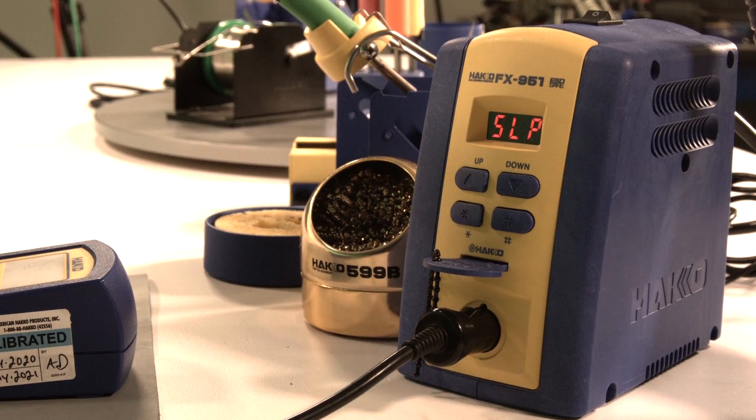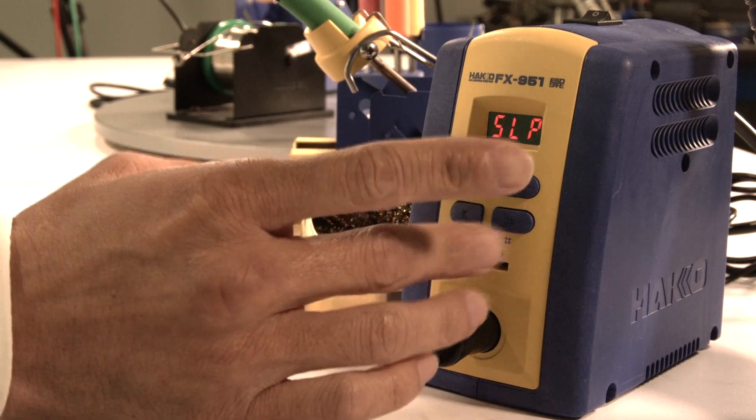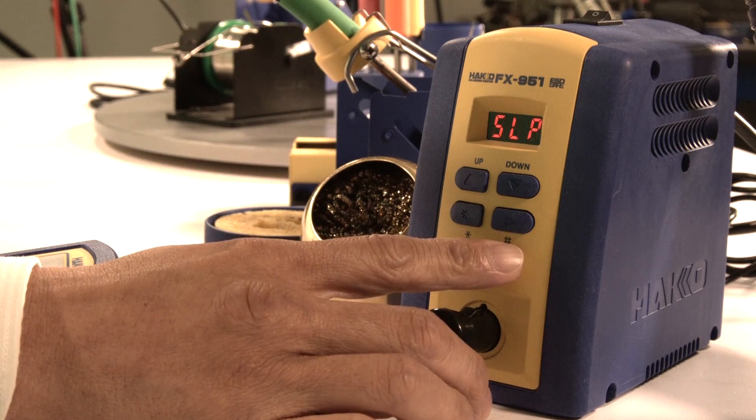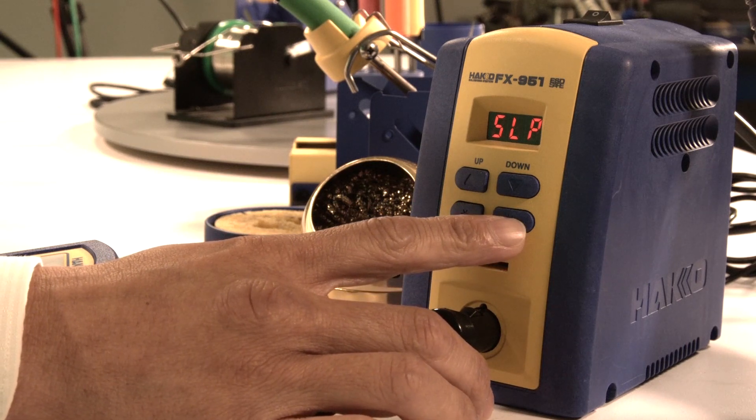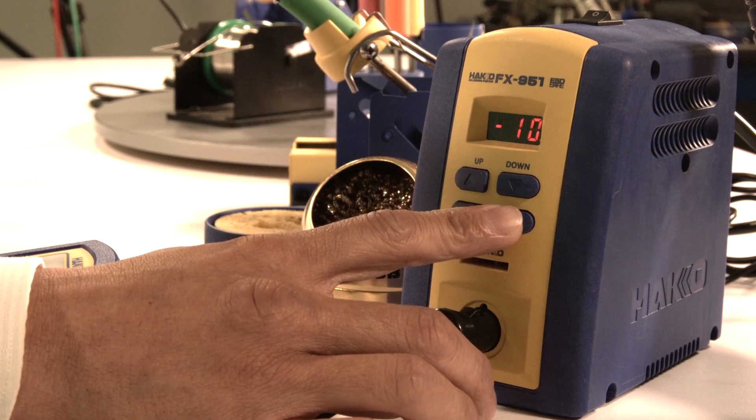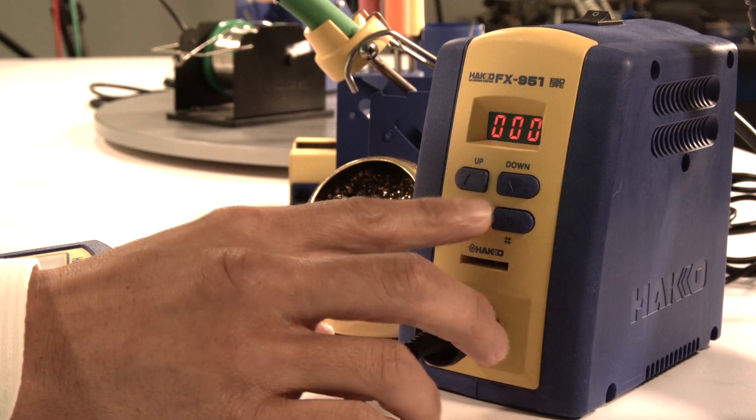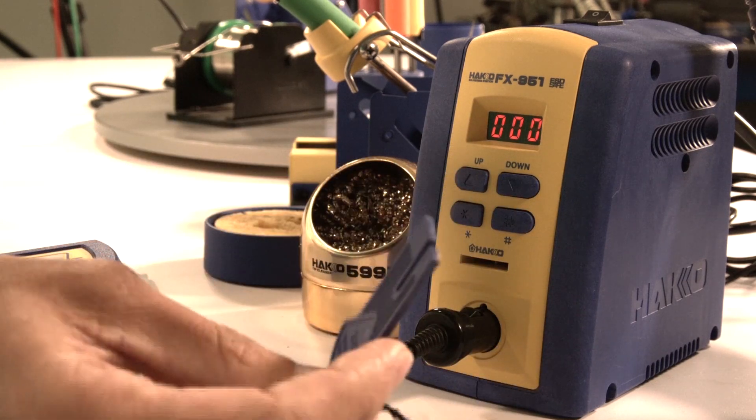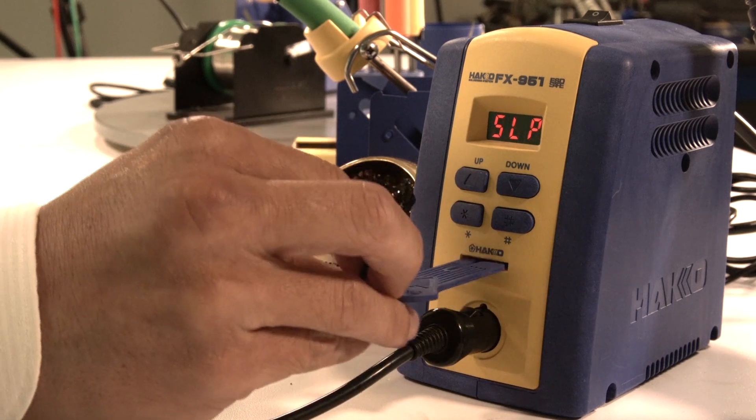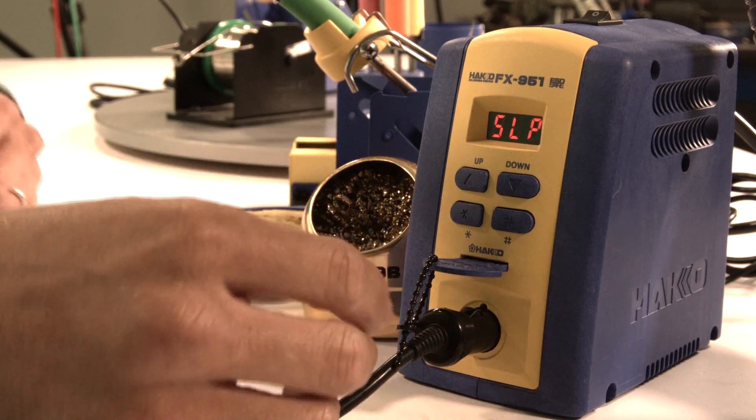The other parameter we changed was the offset value. Before you couldn't change the offset value without the key card. But now if I press the pound button on the bottom right, I can check the offset. If I press and hold it, I can now make changes to the offset value without having the lock key in the station. Those are the six additional controls you get when going into the system parameters.